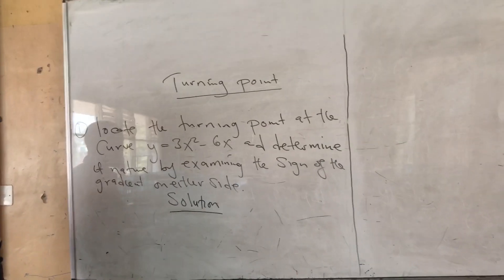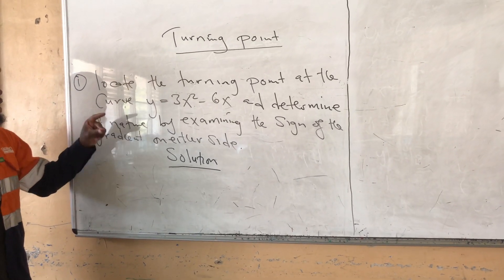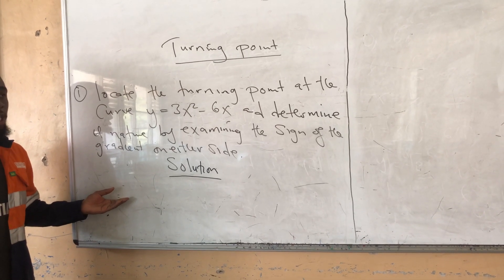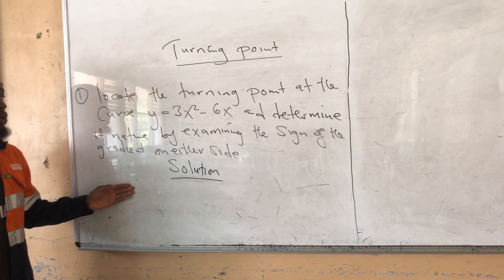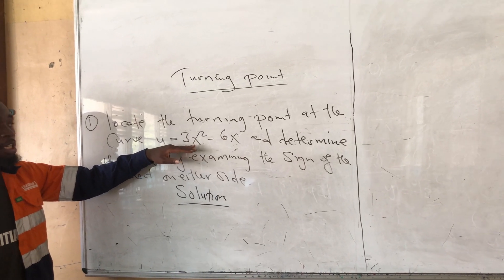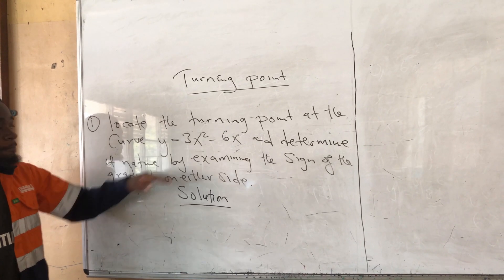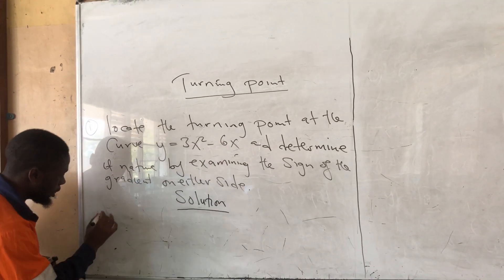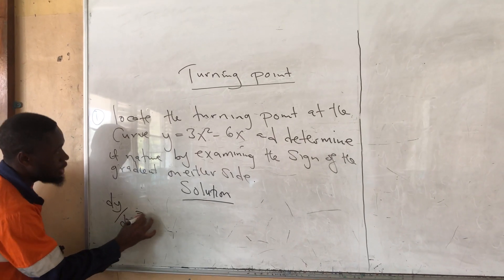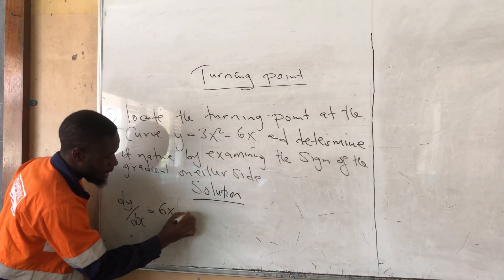The first thing we need to understand is that at the turning point, dy/dx equals 0. So the first thing we do is differentiate this equation. After differentiating it, we set it equal to 0 and find the value of x. The dy/dx of this equation is 6x minus 6.